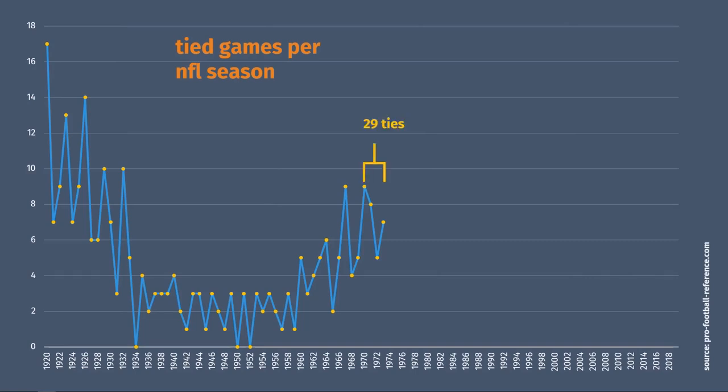But after a rule change added overtime starting in 1974, there have been just 25 tie games since. In 74, a single extra sudden death overtime period was added.